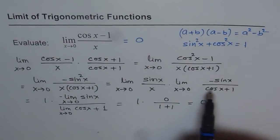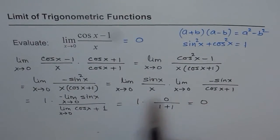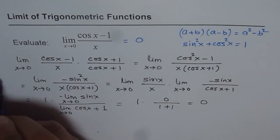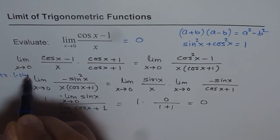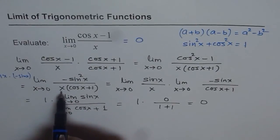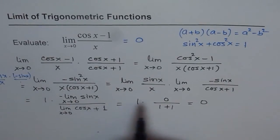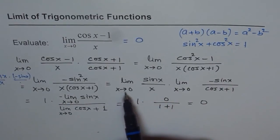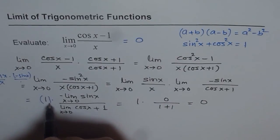Then we applied the properties of limits and split the expression into two parts: sin x over x using one factor of x, and the remaining factor with the other part. This uses the fundamental limit: sin x over x as x approaches 0 equals 1, so we wrote 1 there.